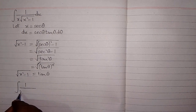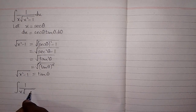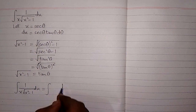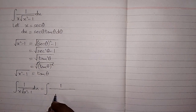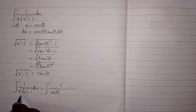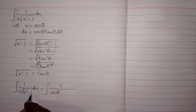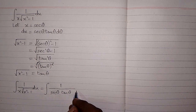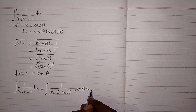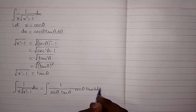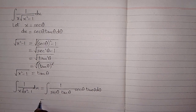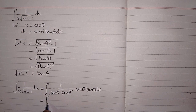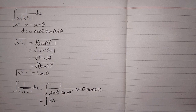Now the integral of 1 upon x times square root of x squared minus 1 dx becomes: in place of x we put sec θ, in place of square root of x squared minus 1 we put tan θ, and in place of dx we put sec θ tan θ dθ. We can then cancel sec θ with sec θ, and tan θ with tan θ, leaving us with the integral of dθ.